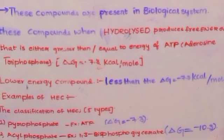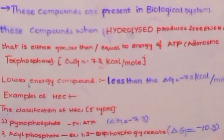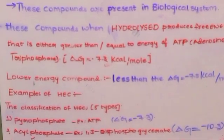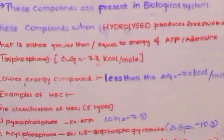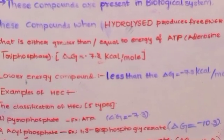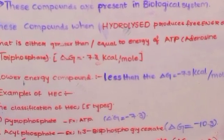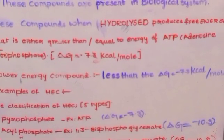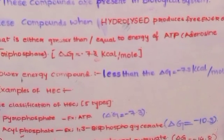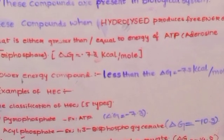The energy produced is either greater than or equal to ATP energy. ATP energy equals minus 7.3 kilocalories per mole. Remember, it is ΔG = -7.3 kcal/mole.